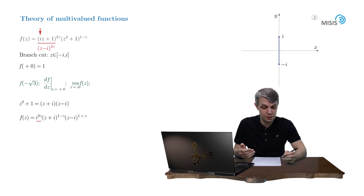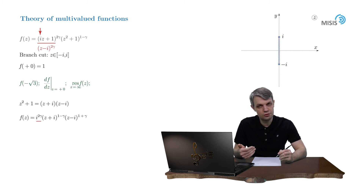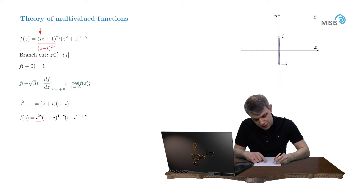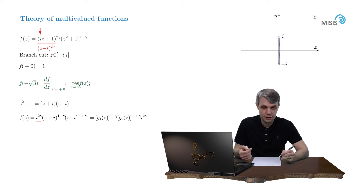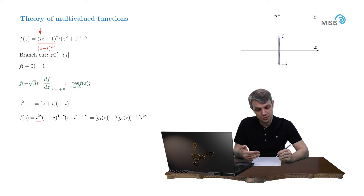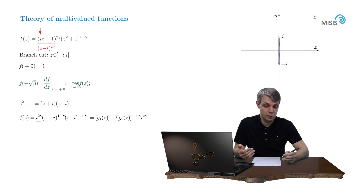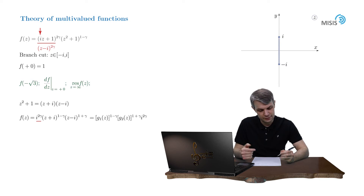The next peculiarity of this function is that it's somewhat more complicated than the previous one, because it consists of two simple multi-valued functions: g1 of z to the power of 1 minus gamma times g2 of z to the power of 1 plus gamma, with this pre-factor i to the power of 2 gamma. Although it consists of the product of two multi-valued functions, we will never separate them. They will always enter our intermediate results as a product, and we will treat them as a single entity.